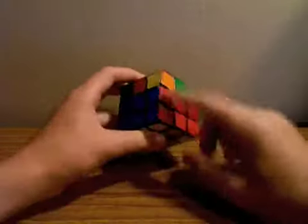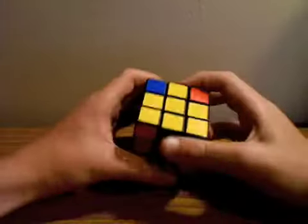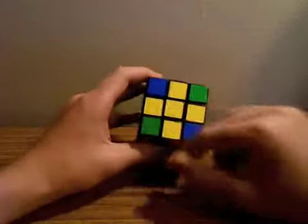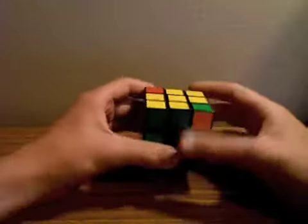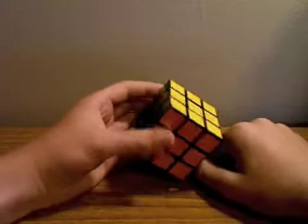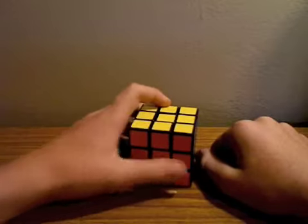After which we would solve a cross on the top. After completing the cross on the top, we would solve these sides, permute them. Then after permuting the sides, we would permute the corners and finish off by orienting the corners. So that's what you'll need to know.